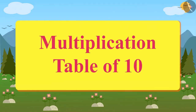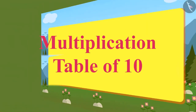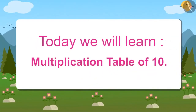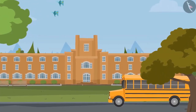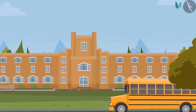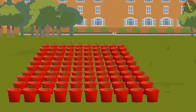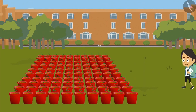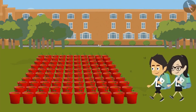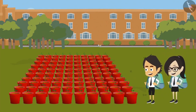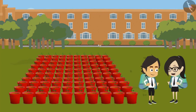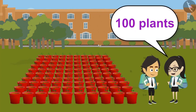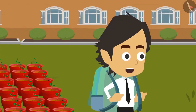Multiplication Table of 10. Today we will learn the multiplication table of 10. New plants will be planted in Vandana and Ayushman's school. All new plants that have been purchased are kept in one place. Vandana and Ayushman come to school and see all the plants kept together. Look Vandana, so many plants are kept here. Not so many, Ayushman — they are in total 100 plants. How did you count so fast, Vandana?